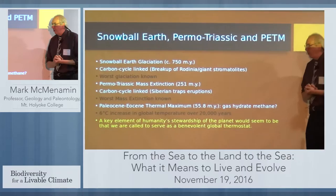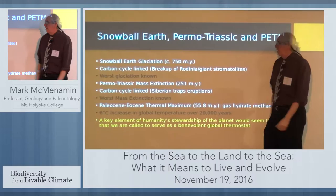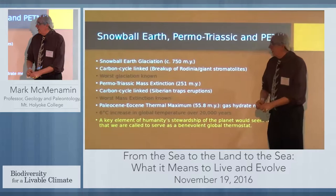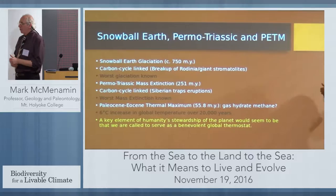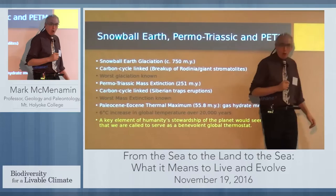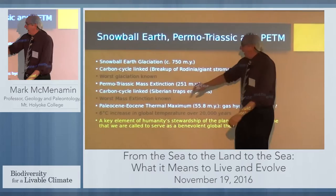Then we have the Permotriassic mass extinction at 251 million years ago, which is now being linked to carbon cycle changes. The Siberian Traps eruptions generated huge amounts of carbon dioxide in the atmosphere, probably leading to oceanic acidification — and this led to the worst mass extinction known.